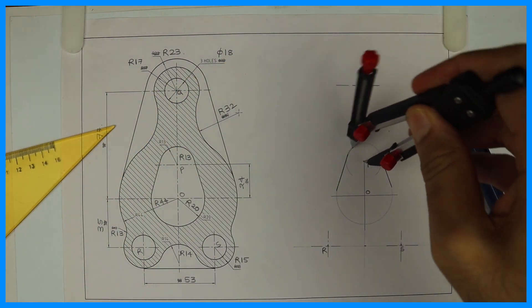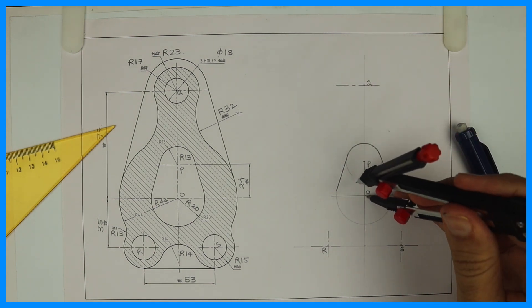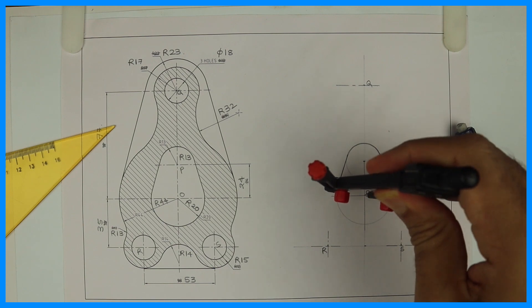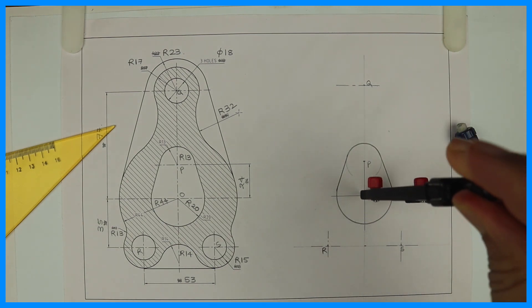So we will get the middle portion. Then whatever portion is left that we can draw dark. So it's very important to draw two light circles and then you draw tangent. So then you will get the exact point.